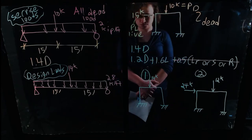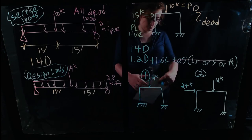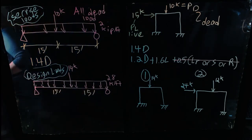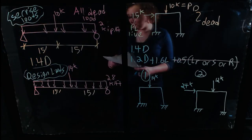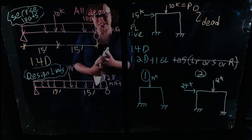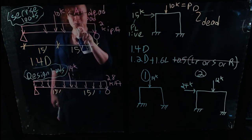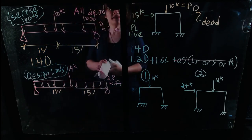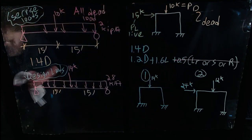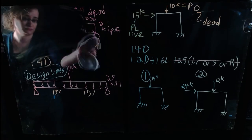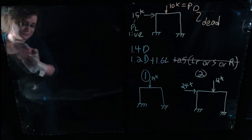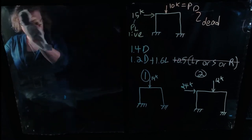Any questions so far? I want to work through one other example, a little more complex. This example will look at how to handle load combinations where you have those OR statements — where those OR statements really mean that one load combination is actually three, or even six, combinations in one.